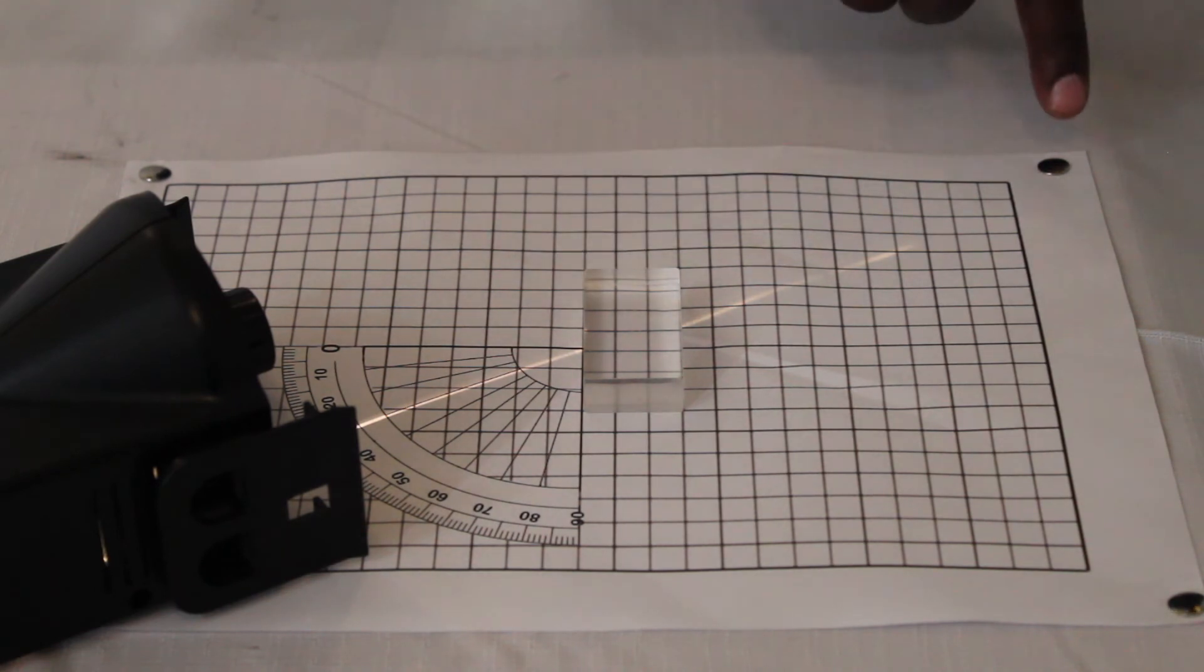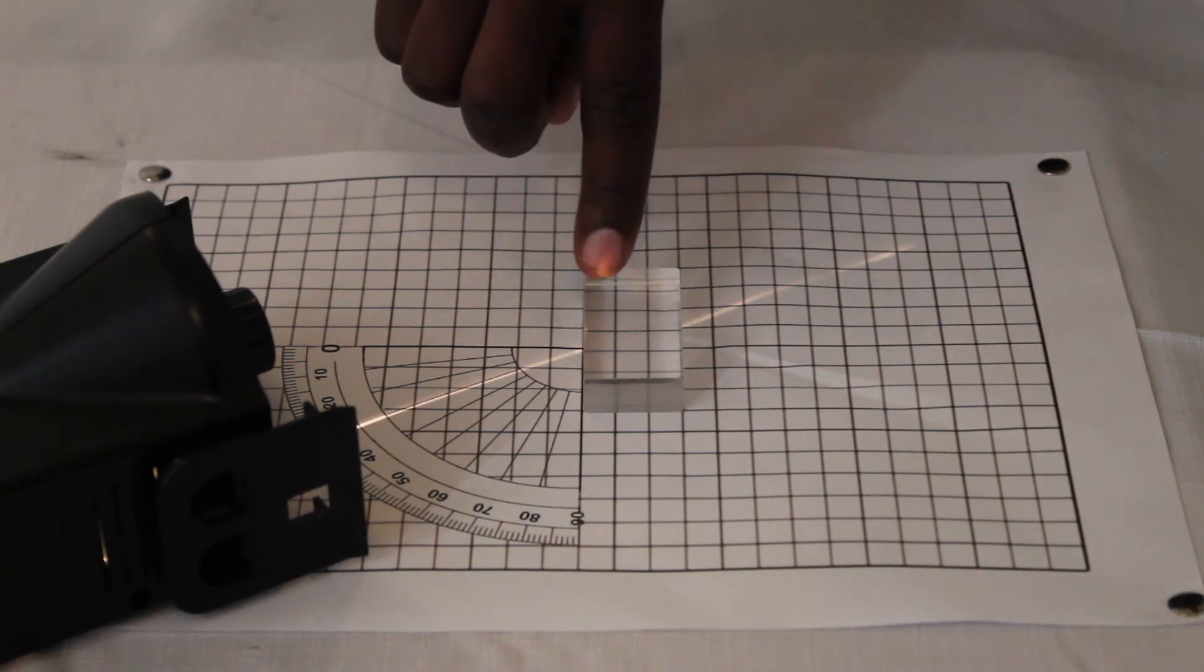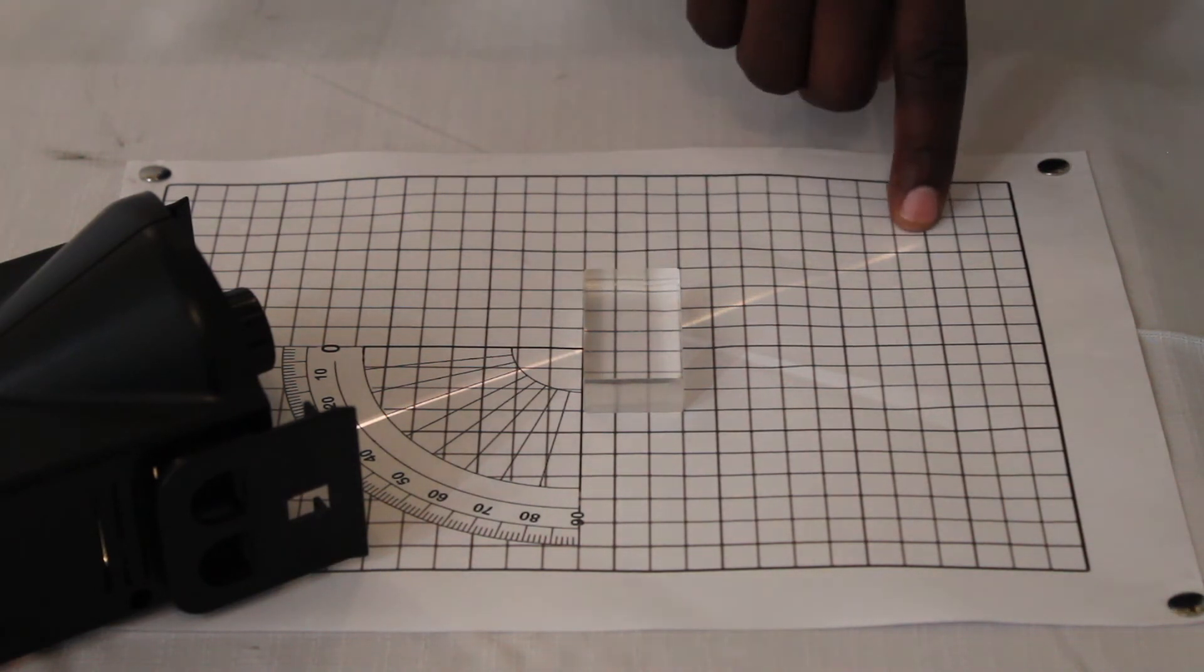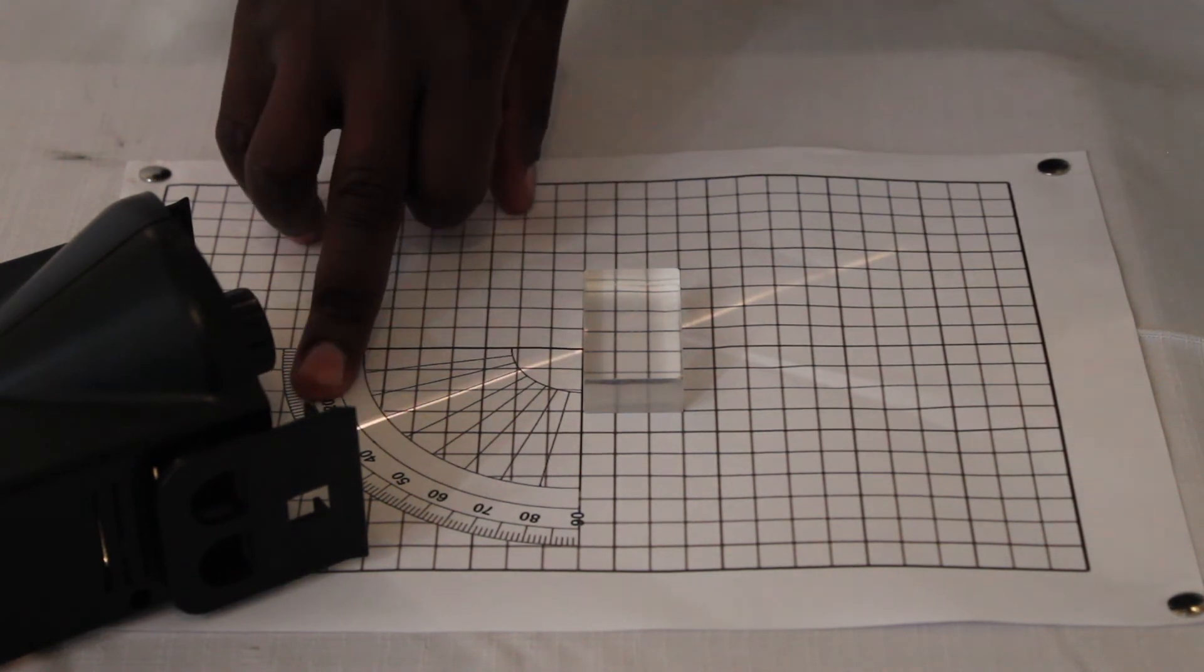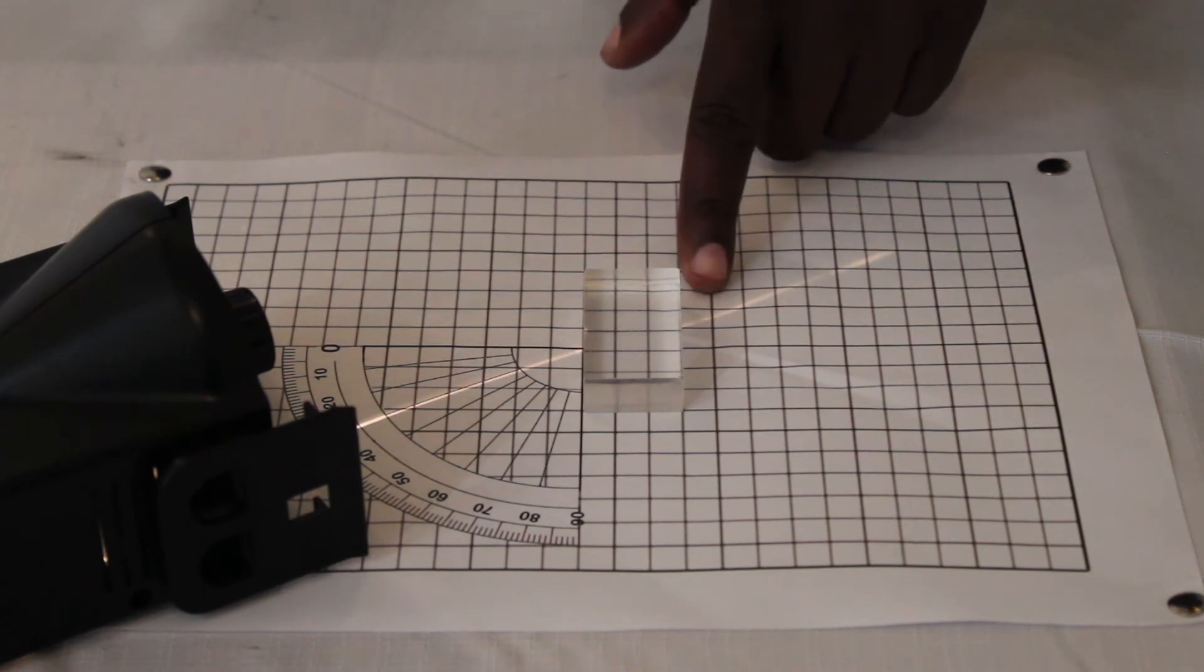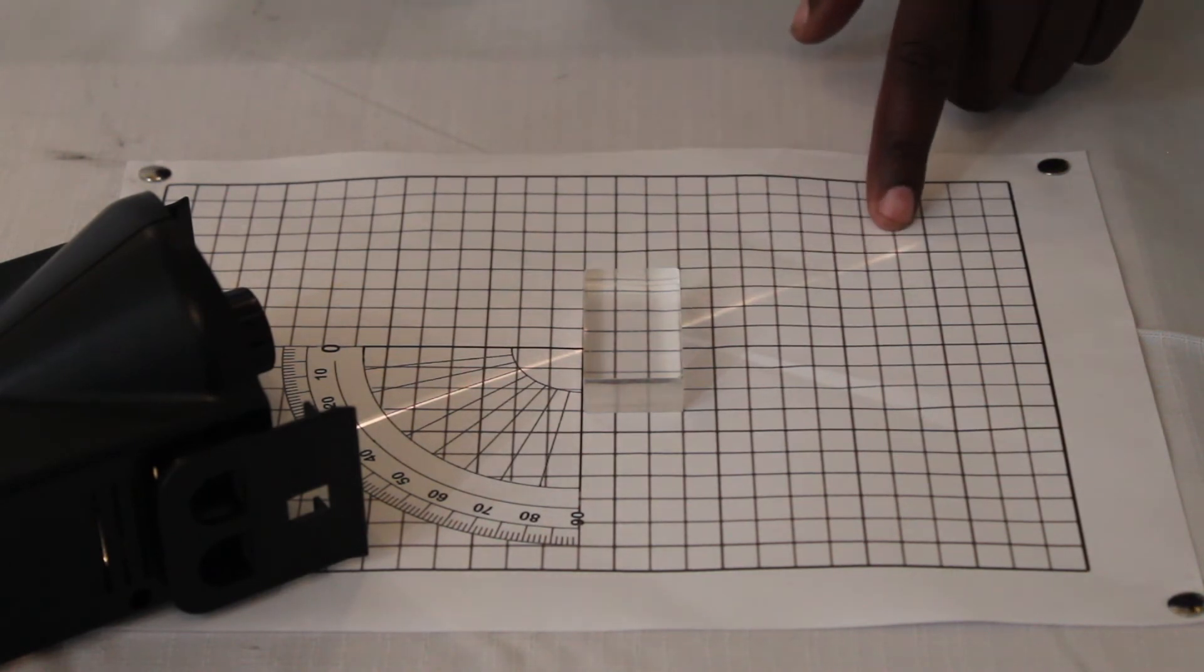So it is somehow refracted, and then it goes out like this. What is basically important, we should note, is the angle of incident on this side should be equal to the angle that it comes out with here.